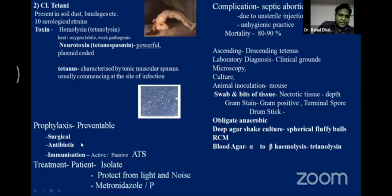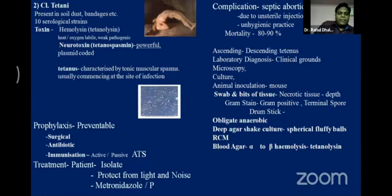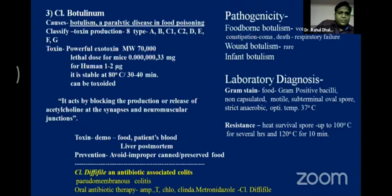Prevention of tetanus: surgical attention, antibiotics, and very importantly immunization — anti-tetanus serum given to the patient prevents infection. In treatment: isolate the patient, protect from knife, noise, and light, and administer metronidazole and penicillin. Botulism is food poisoning caused by Clostridium botulinum. It is a paralytic disease acting by blocking the release of acetylcholine at the synapse and neuromuscular junction.